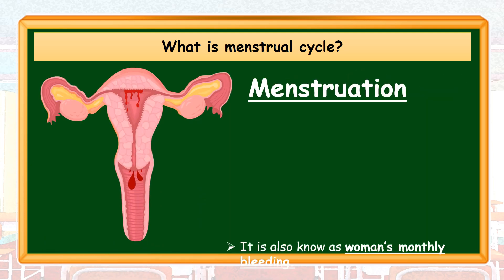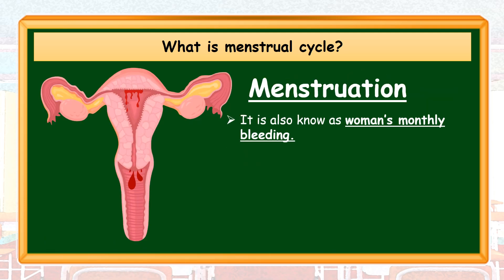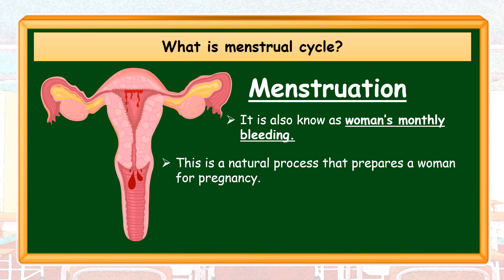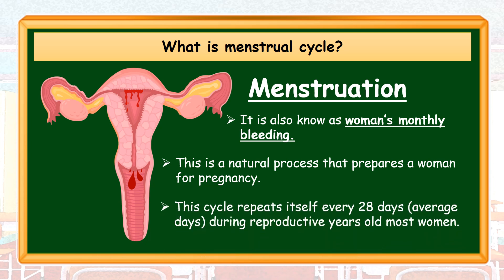Menstruation is also known as a woman's monthly bleeding. This is a natural process that prepares a woman for pregnancy. This cycle repeats itself every 28 days on average during the reproductive years of most women.